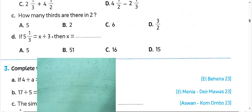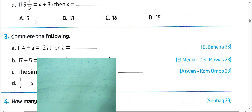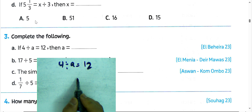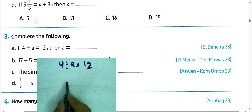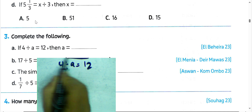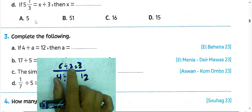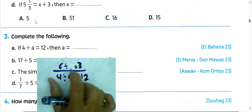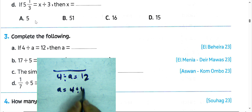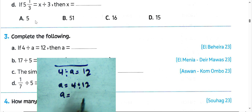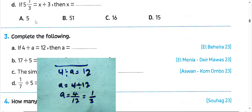Letter C. Question number 3: complete — if 4 divided by a equals 12, what is the value of a? To find a, just as 6 divided by 2 equals 3, to find the divisor you write dividend divided by quotient. So a equals 4 divided by 12, which is 4 over 12. Simplify by dividing by 4: 4 divided by 4 is 1, 12 divided by 4 equals 3. The result will be 1 over 3.